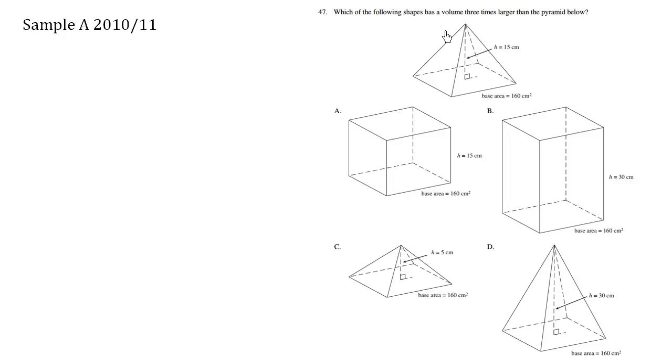Which of the following shapes has a volume three times larger than the pyramid below? So this is the pyramid. We're given the base area is 160 centimeters squared, and we see these other shapes also have the same base area.